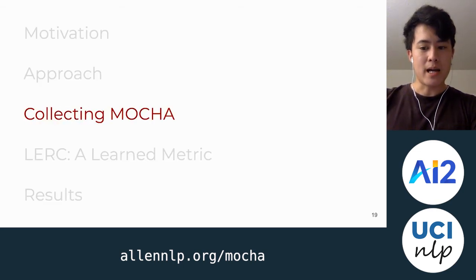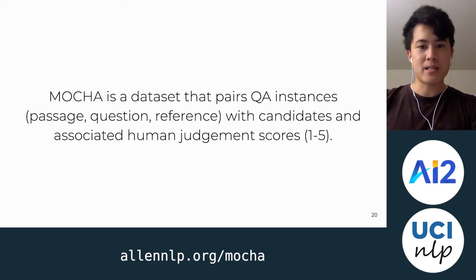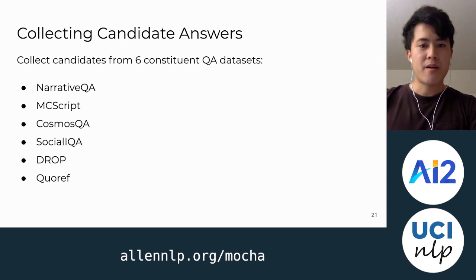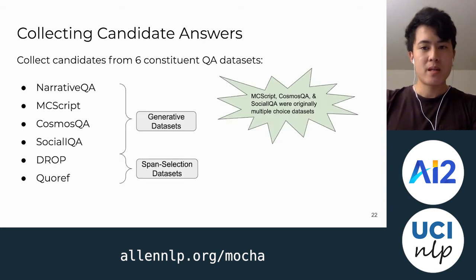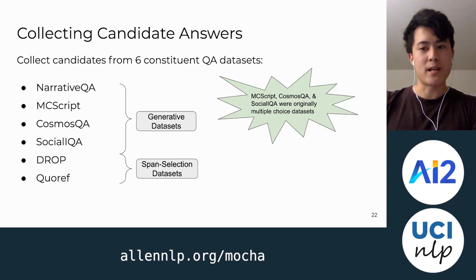This leads us into MOCA. MOCA is a dataset that takes a bunch of question answering instances, pairs them with candidates, and their associated human judgment scores on a scale of one to five. MOCA has candidates from six constituent QA datasets, and we collect from diverse datasets because we don't want a learned metric to overfit to the nuances of any QA dataset. Of these six datasets, four are generative, and of these four, three — MCScript, CosmosQA, and SocialIQA — were originally multiple choice datasets which we've repurposed as generative. Two of them, DROP and Quoref, are span selection datasets, included because we were curious whether a learned metric could do well evaluating span selection datasets.